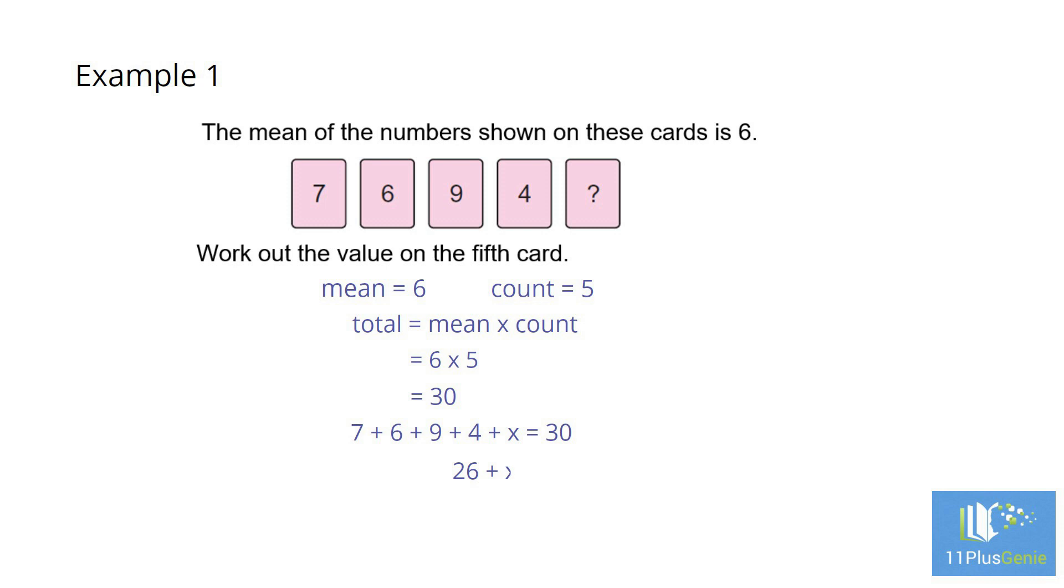We now know that the numbers on the cards must add up to a total of 30. 26 plus x equals 30. x equals 4. The number on the 5th card is 4.